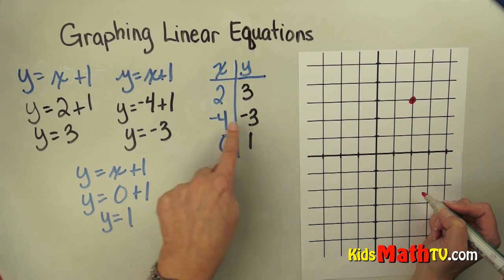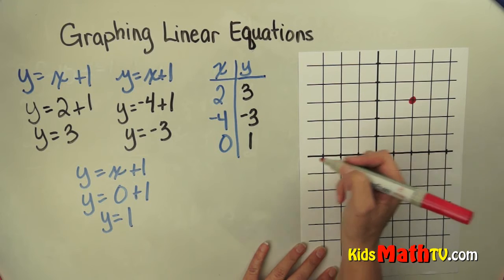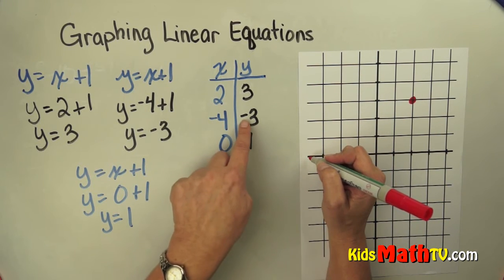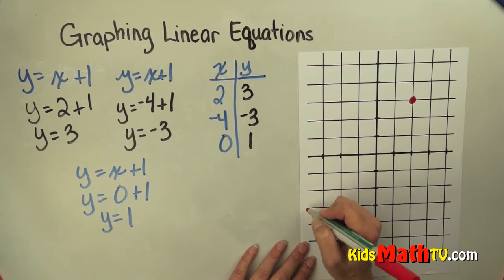Then I have negative 4, negative 3. Negative 4 means I go to the left 4. 1, 2, 3, 4. And down 3 because it's a negative. 1, 2, 3.